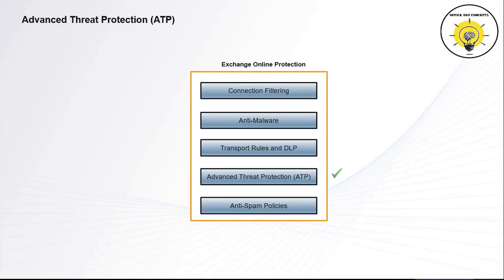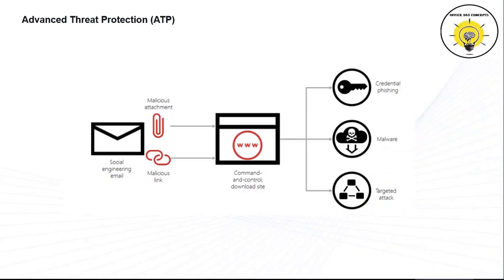Microsoft Office 365 Advanced Threat Protection is a cloud-based email filtering service that provides additional protection against specific types of advanced threats. Advanced Threat Protection helps protect organizations against unknown malware and viruses by providing zero-day protection. Office 365 ATP uses a multi-layered solution to protect mailboxes, files, online storage, and applications against a wide range of threats. Every month, Office 365 ATP blocks more than 500,000 email messages that use HTML and document files that open a website with malicious contents.